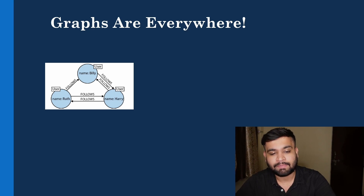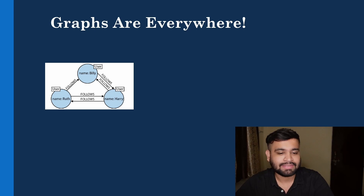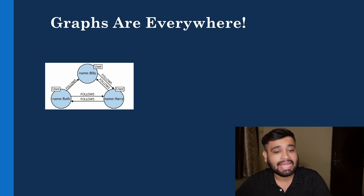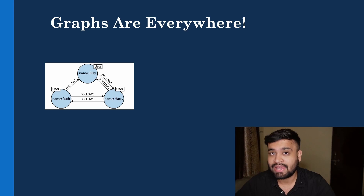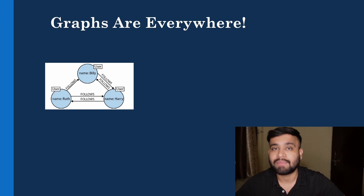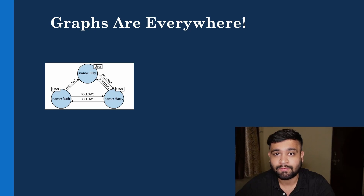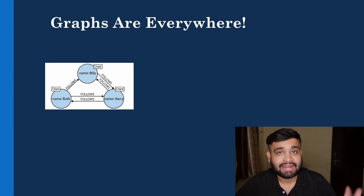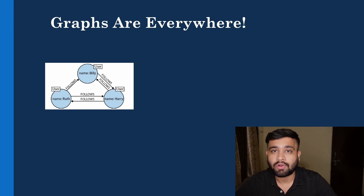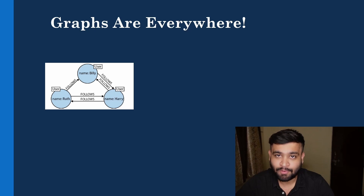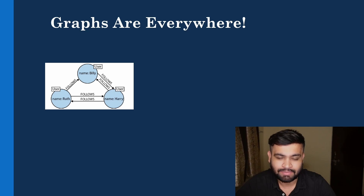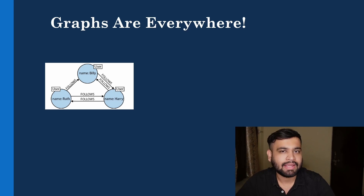To add more context into our graph, we add a relationship parameter. All three have the same relationship which is 'Follows'. As you can see, Billy follows Harry and they have a relationship with a direction between them. Harry has reciprocated and follows Billy back, so we have two relationships with opposite directions. Similarly, Harry and Ruth follow each other, but Billy doesn't follow Ruth, so there is only one relationship there.